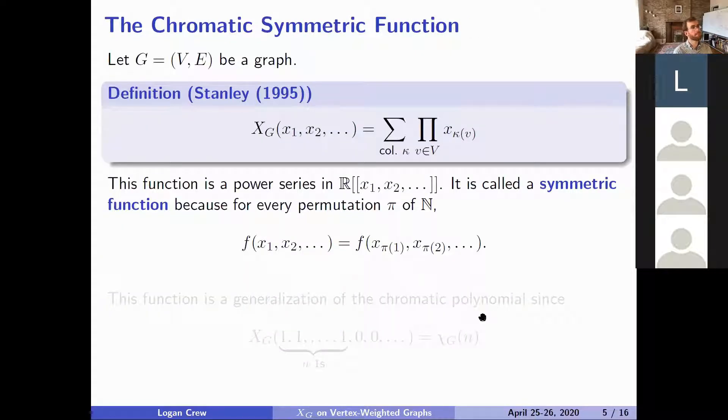We want to apply this to the chromatic symmetric function. So what is that? We use the capital X_G to denote that it's kind of a generalization. This is going to be a sum over all proper colorings of the graph. For each proper coloring, we're going to assign it a monomial.